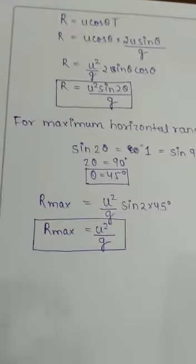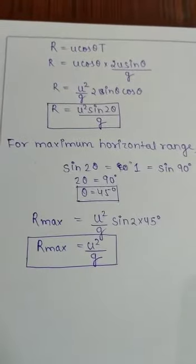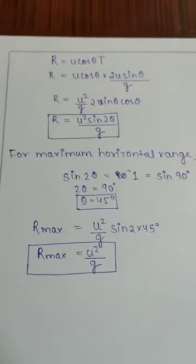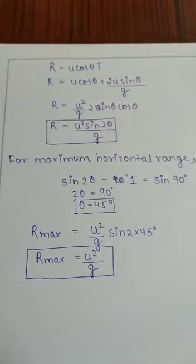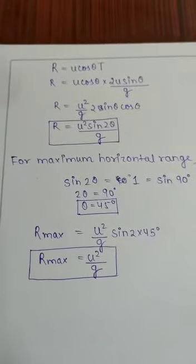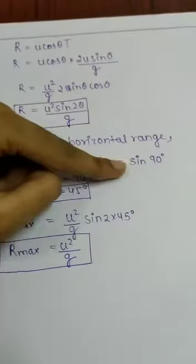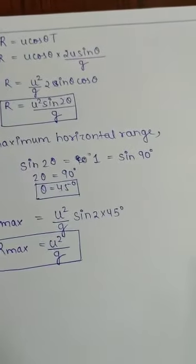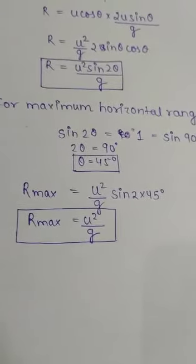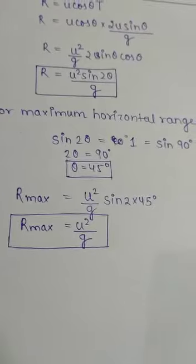So we know that distance is equal to speed into time, so R is equal to u cos theta T. If we put capital T value here, horizontal range is equal to u square sin 2 theta upon g. Horizontal range depends on initial velocity and gravity and angle theta. For maximum horizontal range, sin 2 theta should be 1, and sin 2 theta equals to 1 means 2 theta equals to 90, and theta equals to 45. When theta is 45 degrees, the object will cover maximum horizontal distance. So maximum horizontal range, R max, is u square upon g.